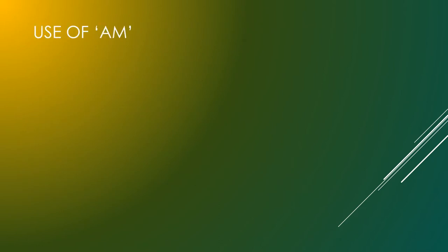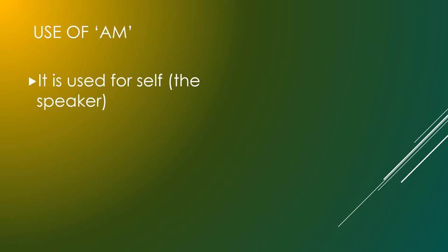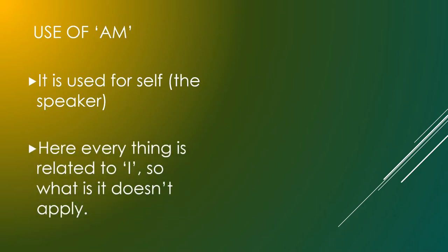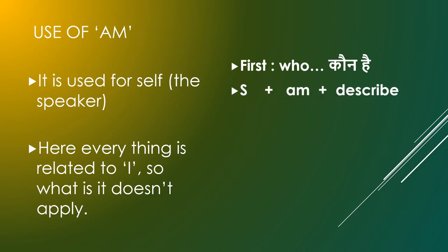Use of Am. Am is used for self — the speaker uses it for himself. Here everything is related to I. For 'who is it': Subject + Am + describe. I am teacher. I am boy. I am girl. I am manager.